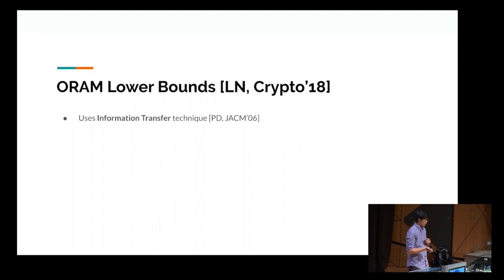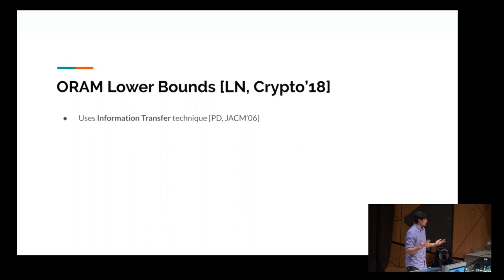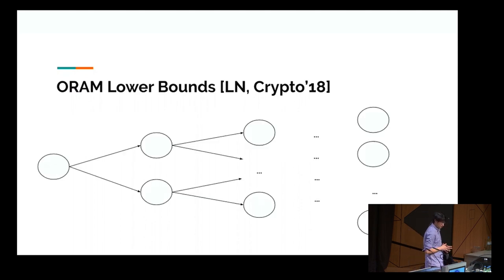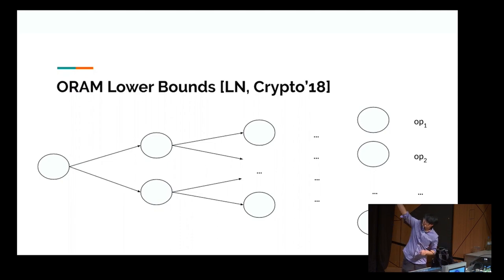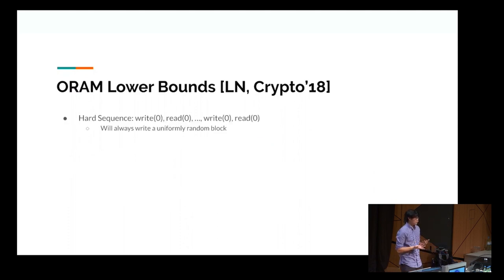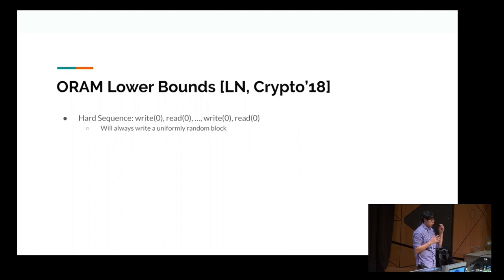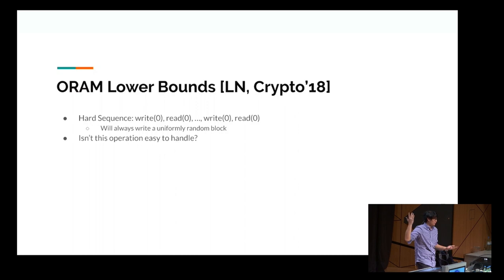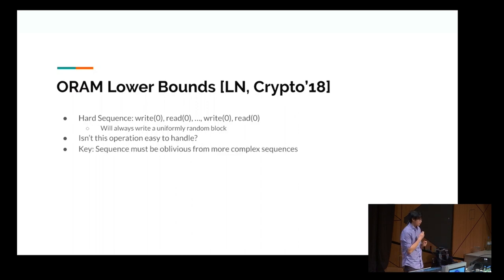Before constructing our lower bounds, I'll go over the previous lower bounds from the seminal work by Larson and Nielsen. This lower bound uses the information transfer technique by Patrascu and Demaine from 2006. The idea is you construct a binary tree with N leaves — drawn sideways, N leaves on the right — and assign each operation of your hard sequence uniquely to a leaf, operation one all the way to operation N. The hard sequence used by Larson and Nielsen is very simple: read to the zeroth index, write to the zeroth index, and alternate, where writes are always uniformly random blocks. The key idea is that this sequence must be oblivious for many more complex sequences.